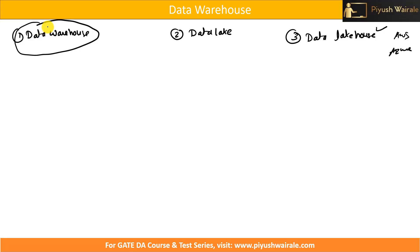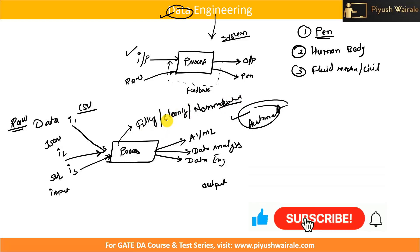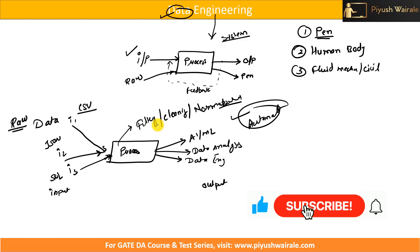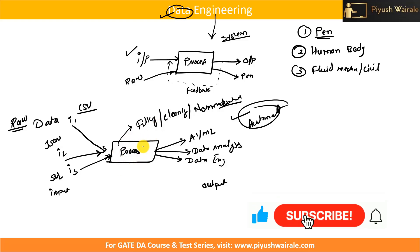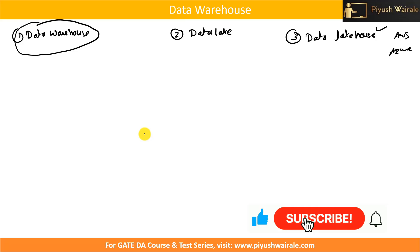We are going to discuss all those things in the upcoming lectures — first data warehouse, data lake, and data lakehouse, then the data warehouse concept in detail according to our GATE and DAC syllabus. The process on data includes different activities such as filtering, data cleaning, normalization, and so on. There are different ways to represent data engineering and different definitions, but understanding this input-process-output system is more than enough. That's it for this lecture — we will discuss data warehouse in the next video.